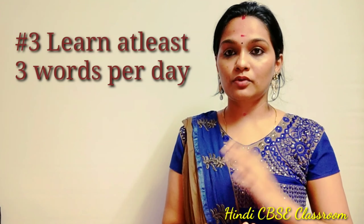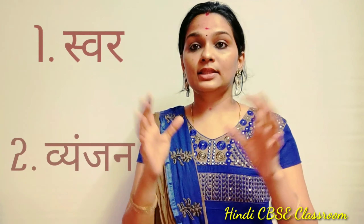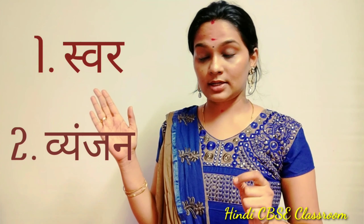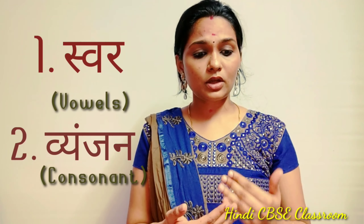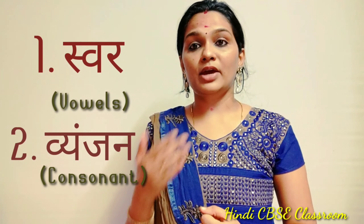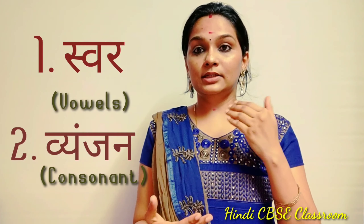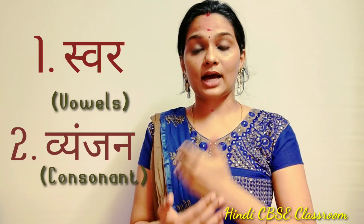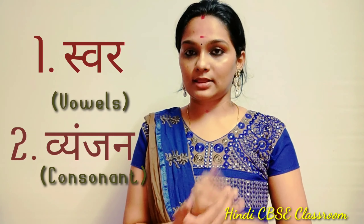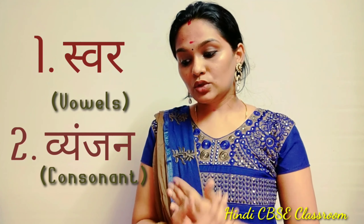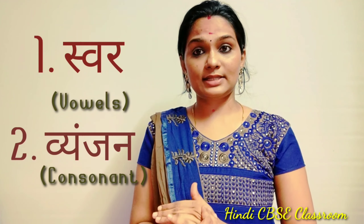So now let's move on to Varna Mala. To learn Hindi alphabets, you have to understand that the Hindi alphabet is divided into two segments. The first one is Swar, the second one is Vyanjan. Swar is nothing but the vowels of the English alphabet. The only difference is that there are only five vowels in English, whereas there are thirteen vowels in the Hindi Varna Mala. Vyanjan means English consonants.